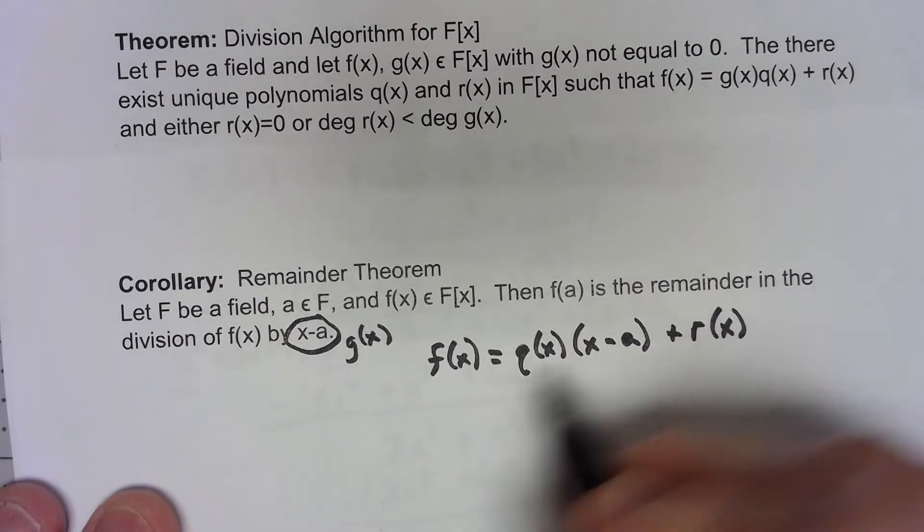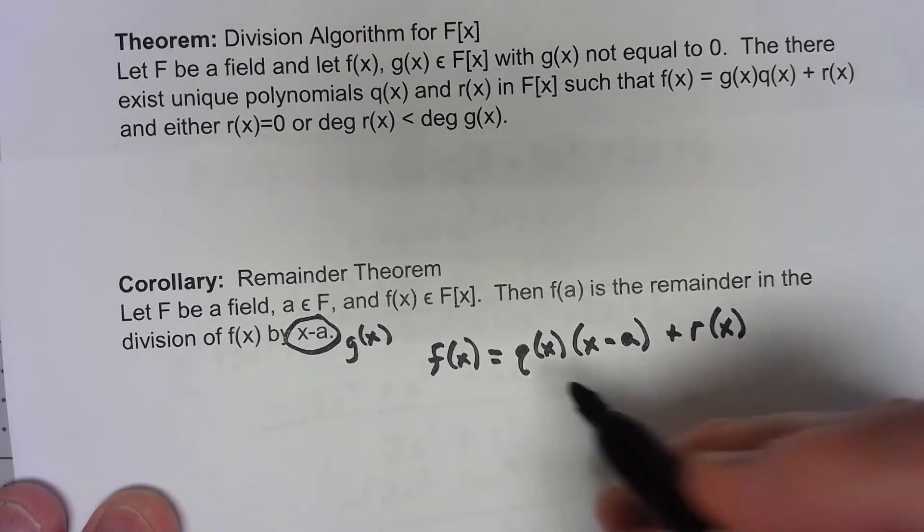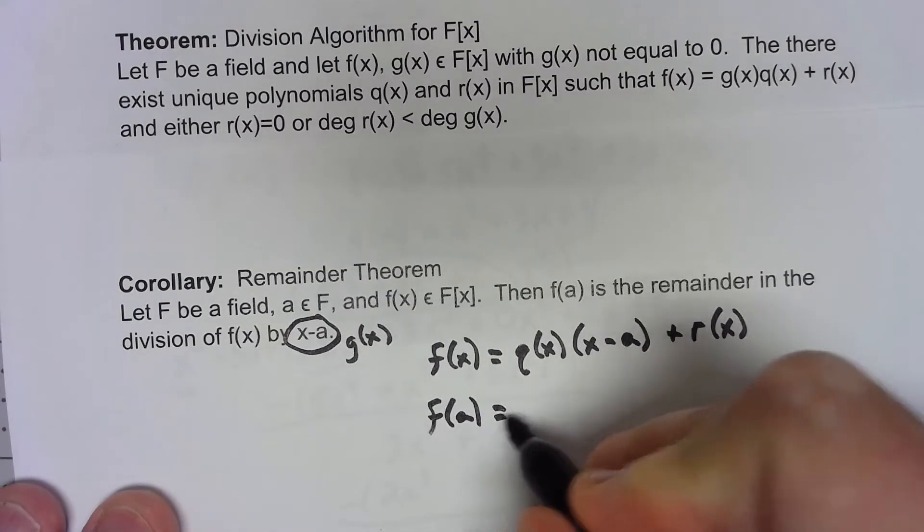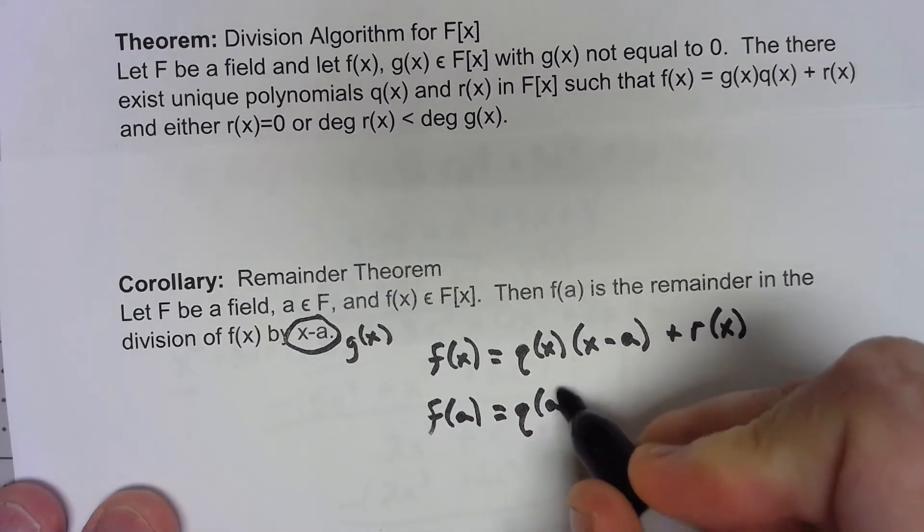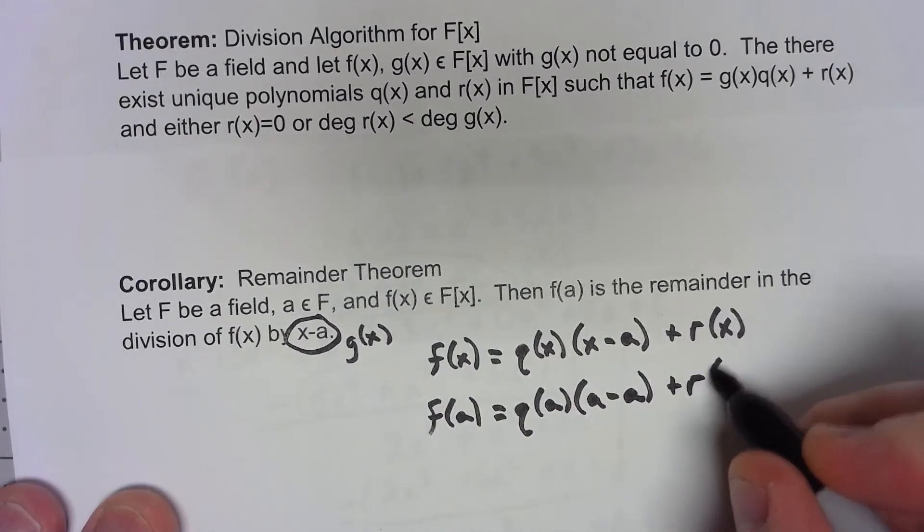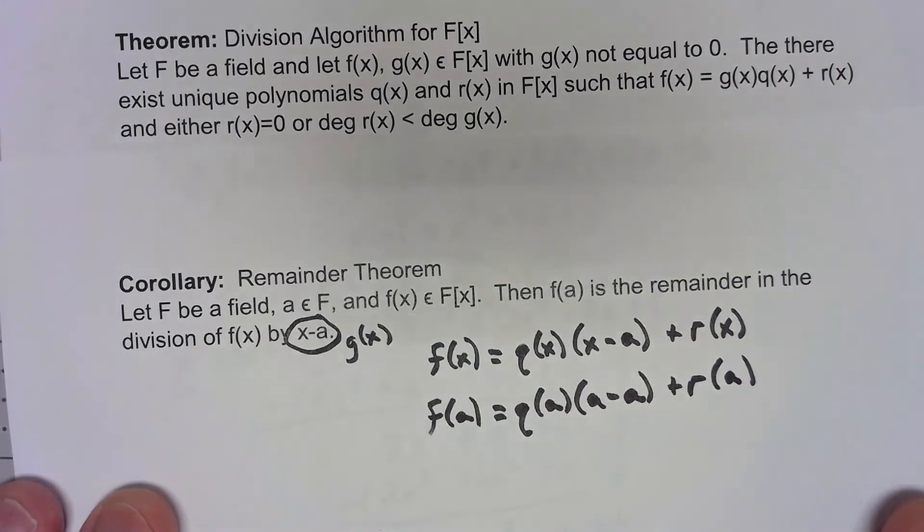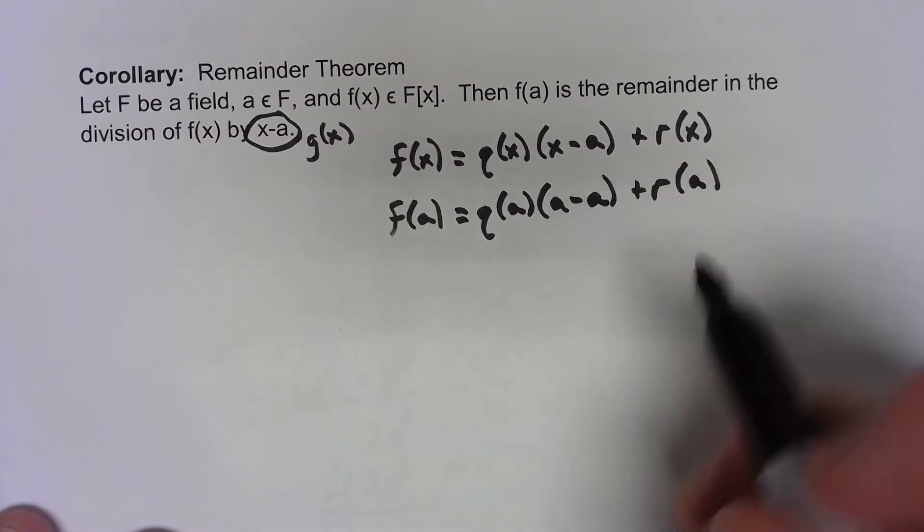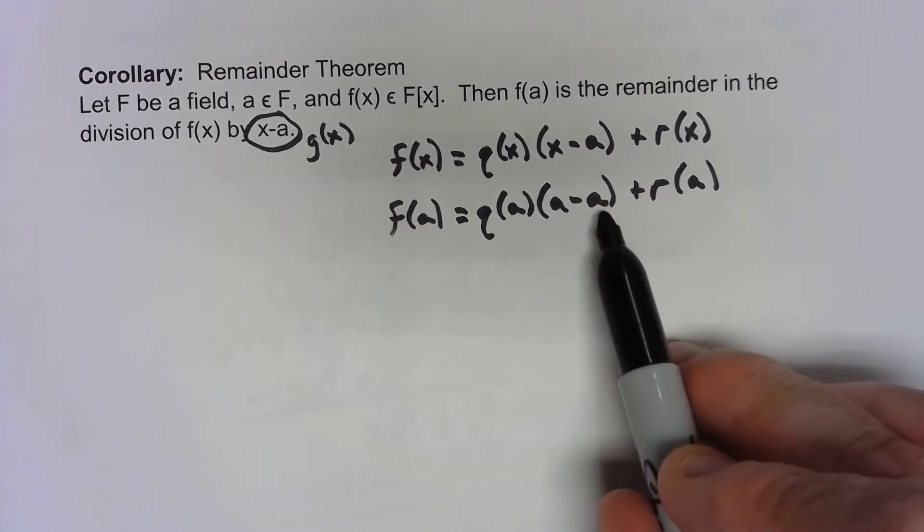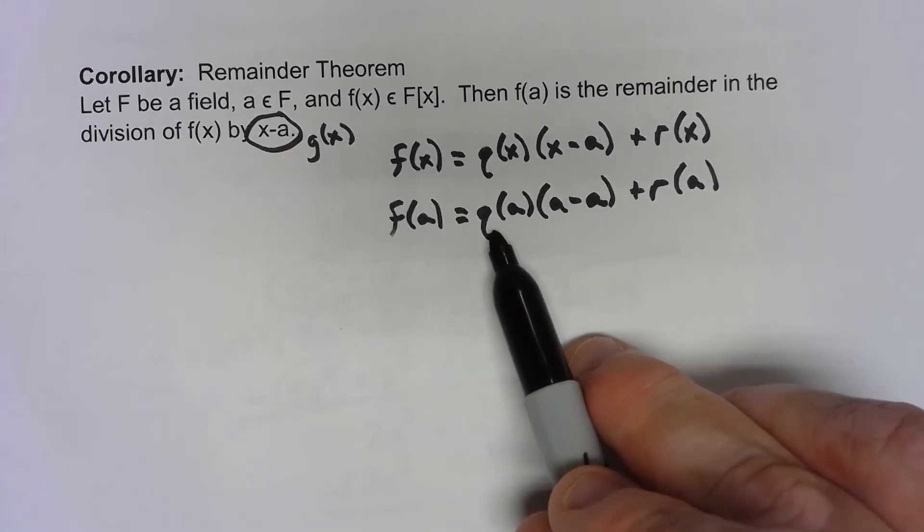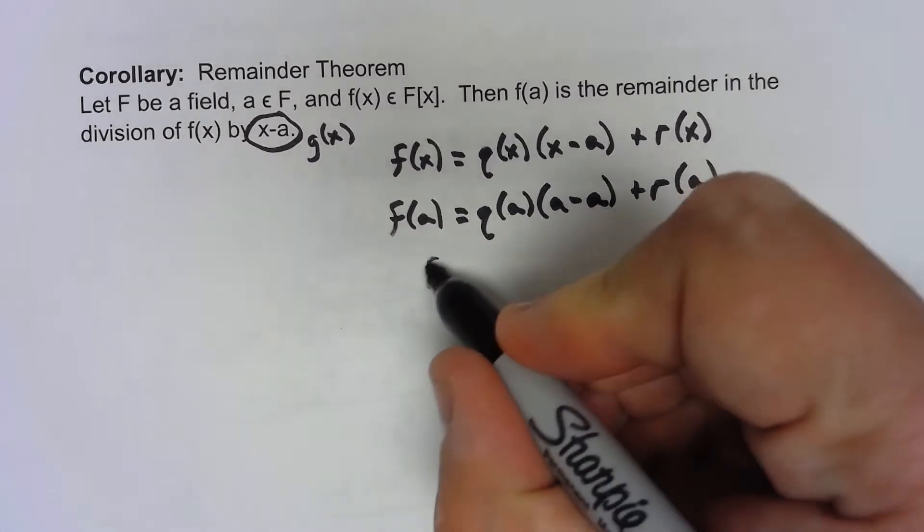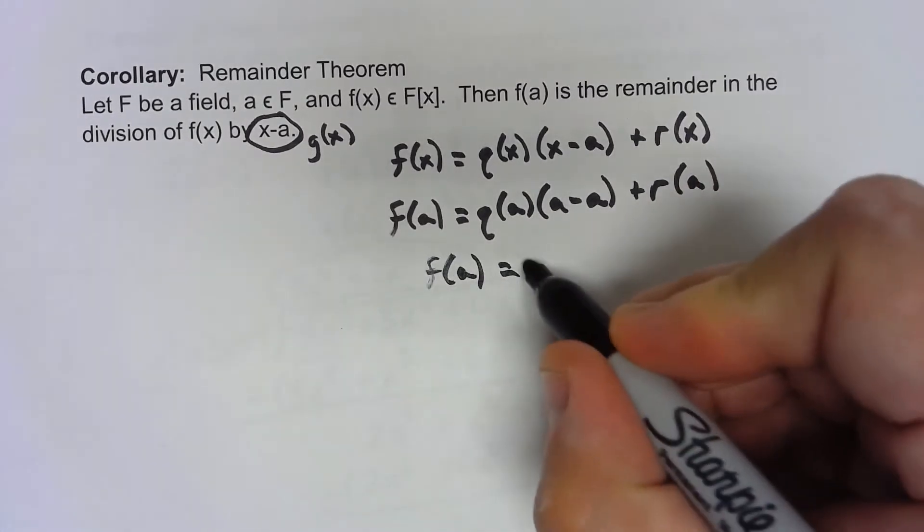If I take that and if I evaluate both sides at A, I get f(A) is equal to q(A) times A minus A plus r(A). But then of course A minus A gives us the 0 element and the 0 element times anything is the 0 element. Add it to that, so f(A) has to be the same as r(A).